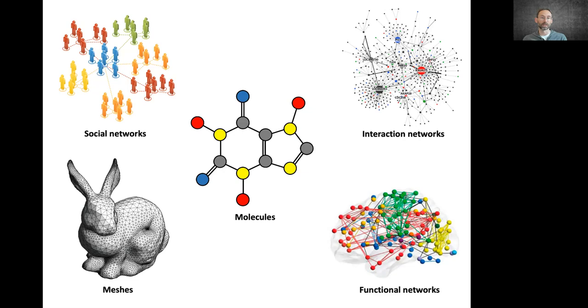Social networks are another prominent example. We also have interaction networks in biological sciences, manifolds and meshes in computer graphics, and so on. These are examples of data that we try to deal with in this framework of geometric deep learning.